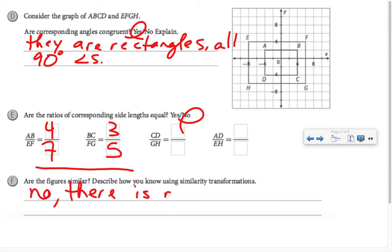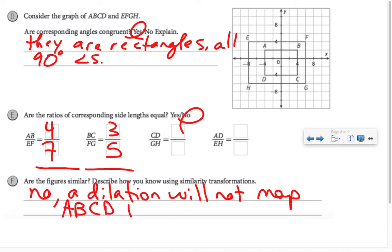There is no similarity transformation, or better put, a dilation will not map ABCD to EFGH.